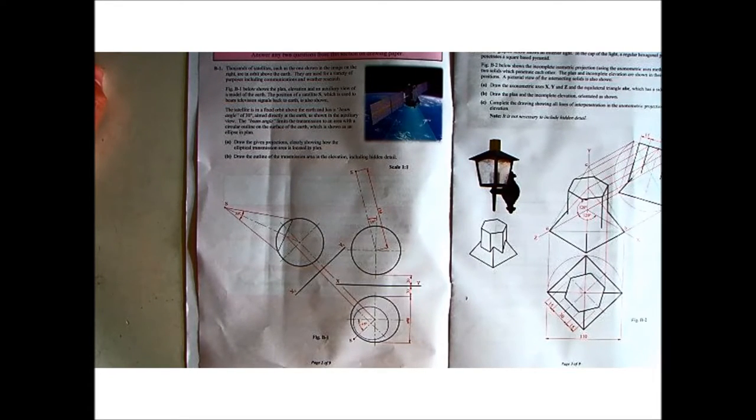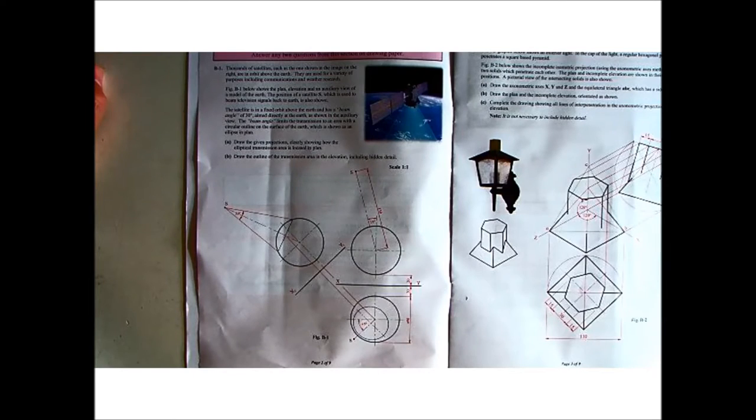Part A: draw the given projections, clearly showing how the elliptical transmission area is located in plan. Part B: draw the outline of the transmission area in the elevation, including hidden detail. So, a nice orthographic projection question. As always, start off with what's been given, and the scale is 1 to 1.